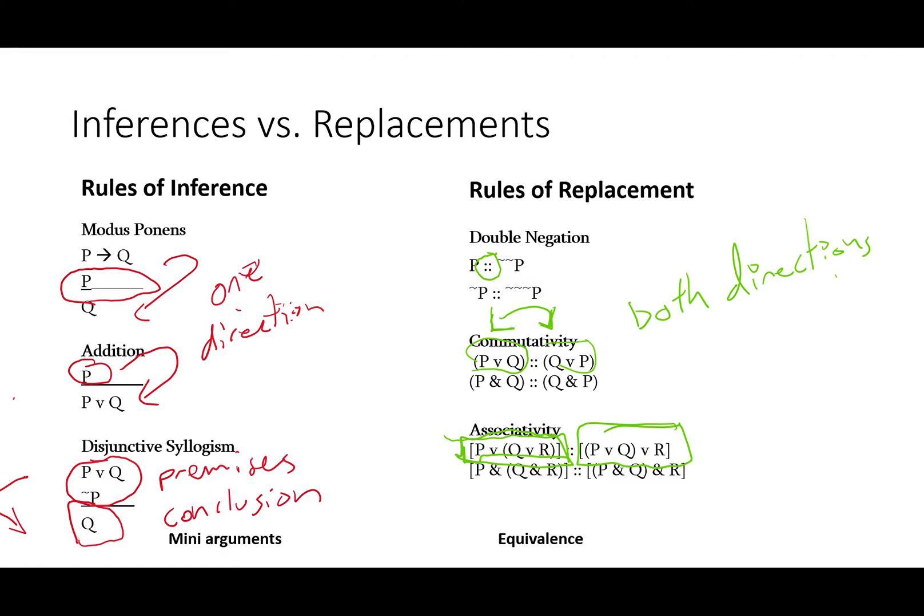Rules of inference go only in one direction, just like arguments. You can't go from Q to if P then Q and P, but you can go from if P then Q and P to Q.